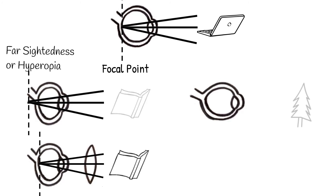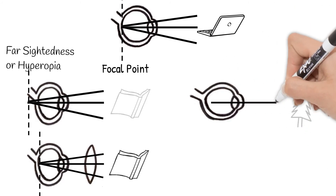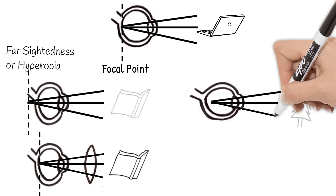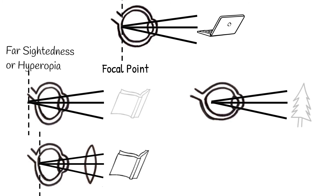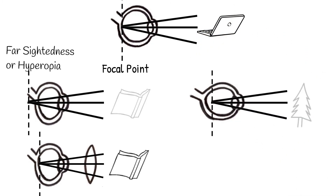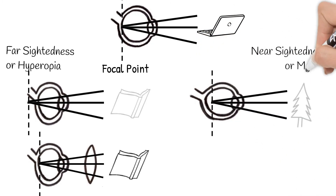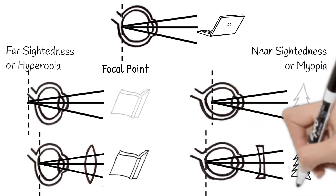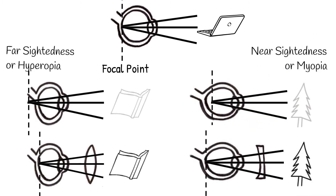On the other hand, if your eyeball is too long, far objects will be blurry. The point where the image would be in focus falls before your retina — this is nearsightedness or myopia — and can be corrected with a concave corrective lens.